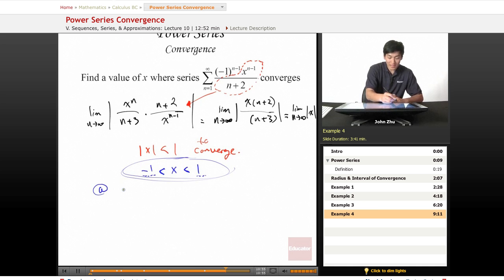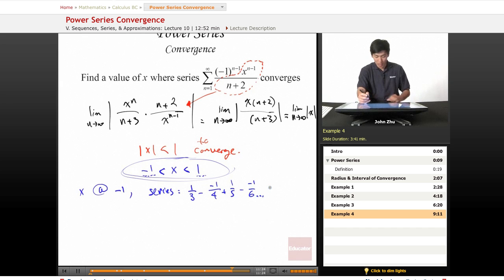So let's go ahead and check at x = -1. The series becomes, plugging in x = -1 into our original series and applying the iterated n terms: 1/3 - (-1)/4 + 1/5 - (-1)/6 and so on. And we see that this equals 1/3 + 1/4 + 1/5, and this diverges.